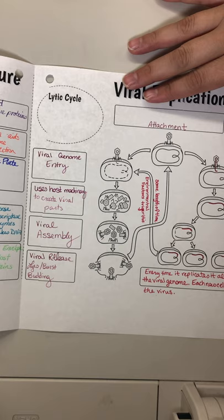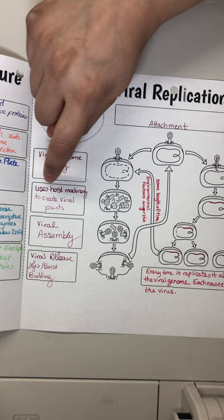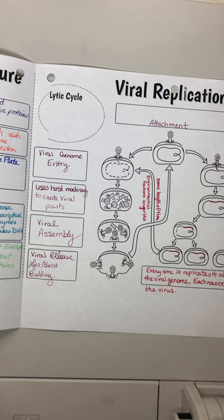We're going to focus first on the lytic cycle — the smallest word is the fastest cycle. We're going to inject the viral genome into the cell, and then the host machinery is going to create new viral parts. It has to create both the viral genome and the viral proteins to build the capsid — to build the structure to surround the genome.